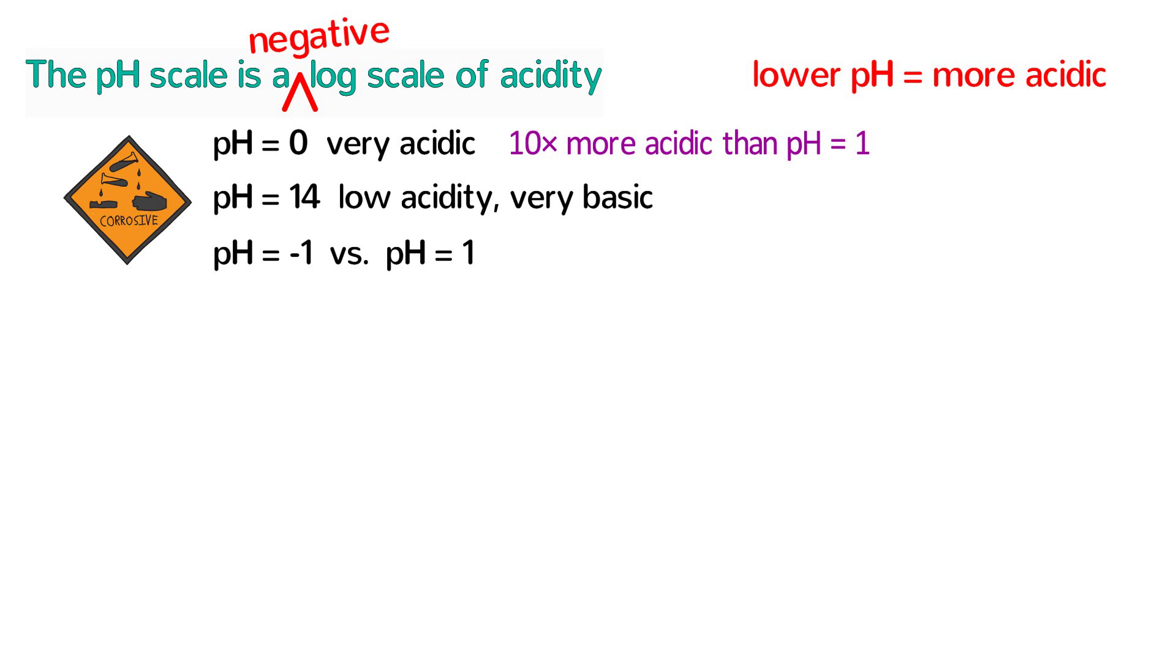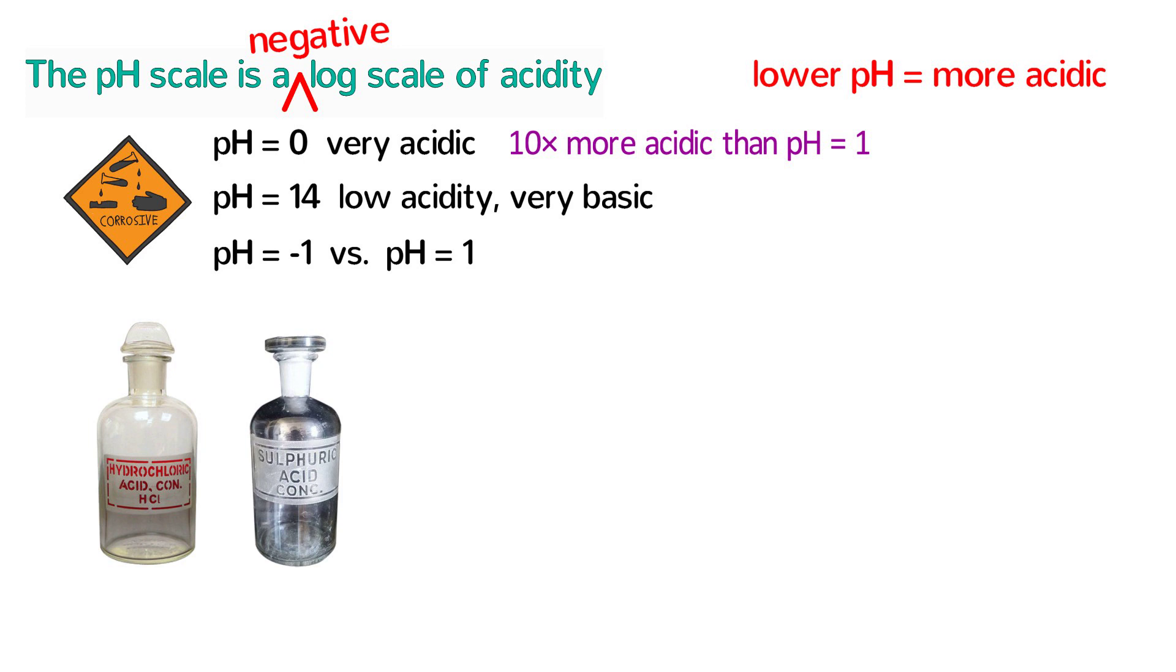You may be wondering whether a negative pH is even possible. But it most certainly is possible. In fact, concentrated solutions of strong acids often have negative pHs.